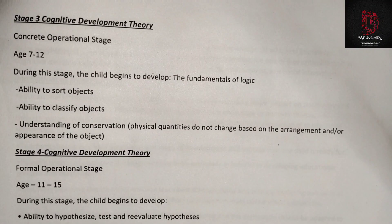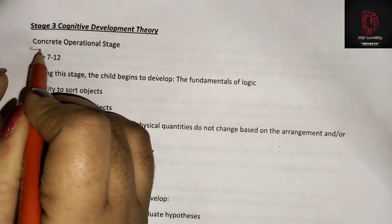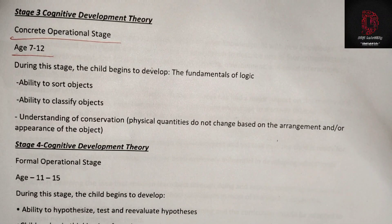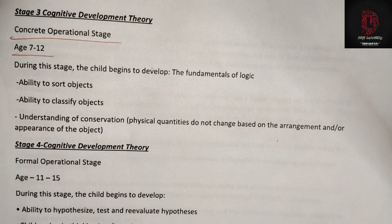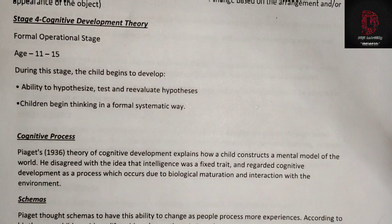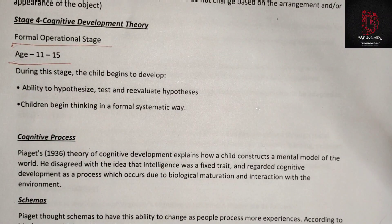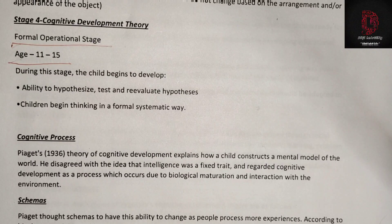Stage 3 — Concrete Operational Stage: ages 7 to 12. During this stage the child begins to develop the fundamentals of logic, ability to sort objects, ability to classify objects, and understanding of conservation — that physical quantities do not change based on the arrangements or appearance of objects. Stage 4 — Formal Operational Stage: ages 11 to 15. During this stage the child begins to develop the ability to hypothesize, test, and re-evaluate hypotheses. Children begin thinking in a formal, systematic way.